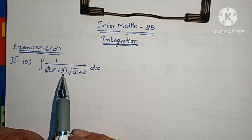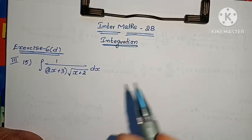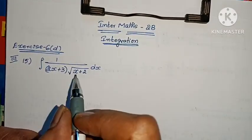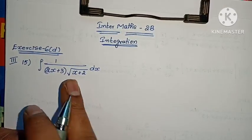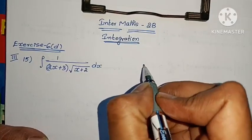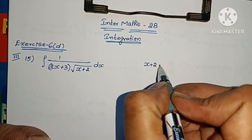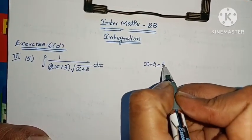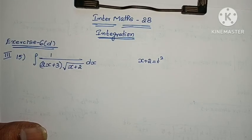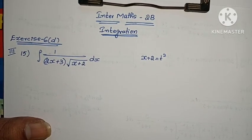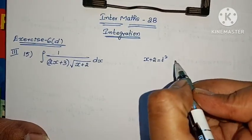Integral of 1 by (2x plus 3) times root of (x plus 2) dx. Here we can see x plus 2 under the root, so let x plus 2 equals t squared. This model helps solve many problems. Let's start.